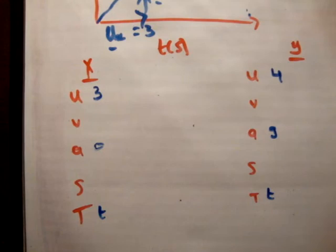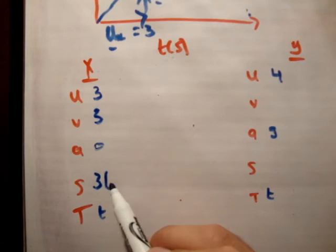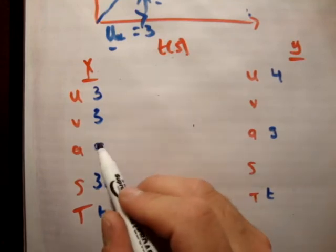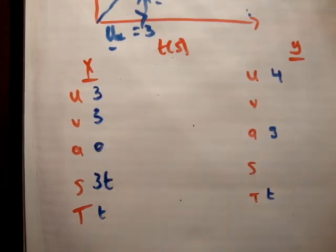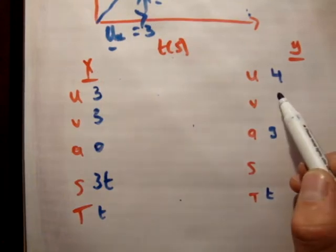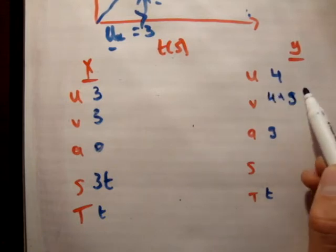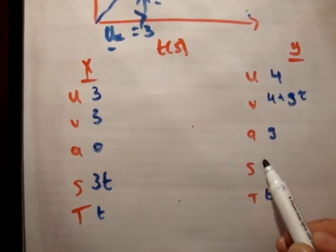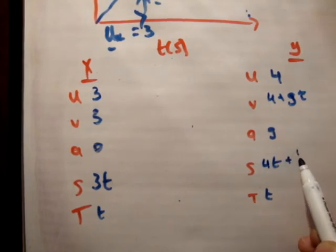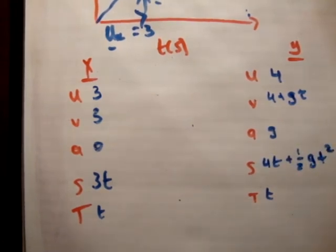If we use v is equal to u plus at, we'll find that this doesn't change. And this is equal to 3t. We've done that plenty of times. This is equal to u plus at. So it's 4 plus gt. And this is 4t plus a half gt squared, ut plus a half at squared.